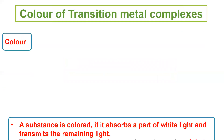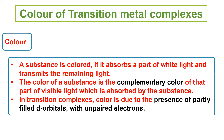Color of transition metal complex: A substance is colored if it absorbs a part of white light and transmits the remaining light. White light has 7 colors. The color of a substance is the complementary color of that part of visible light which is absorbed. In transition complexes, color is due to the presence of partly filled d-orbitals.